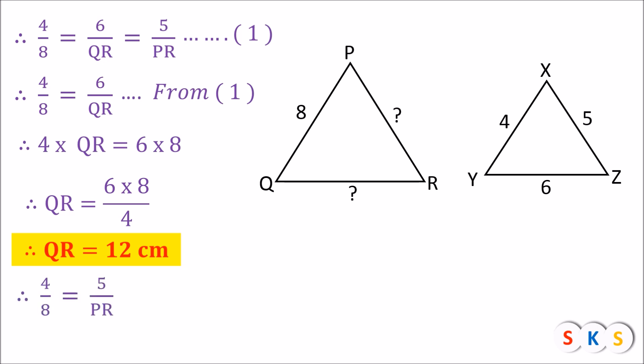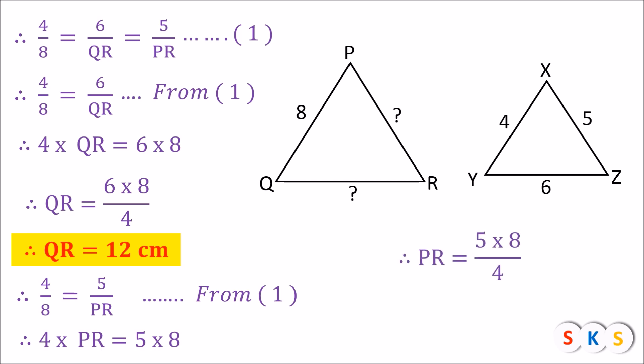Similarly, from equation 1, taking 4 upon 8 equals 5 upon PR, cross-multiplying gives 4 × PR equals 5 × 8. So PR equals 5 × 8 upon 4. Cancelling 8 by 4 gives PR equals 5 × 2, so PR equals 10 cm. Therefore QR is 12 cm and PR is 10 cm.